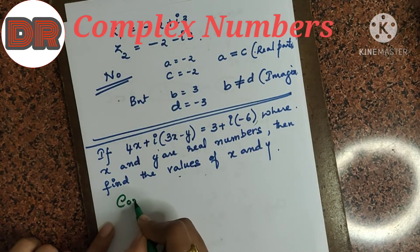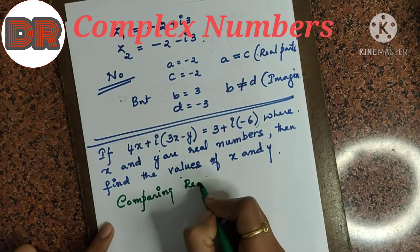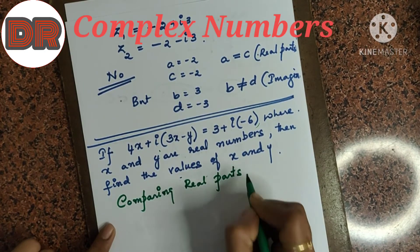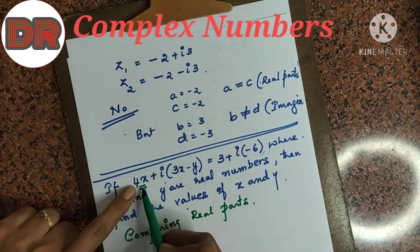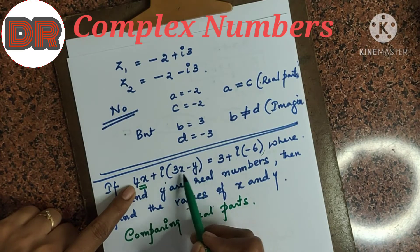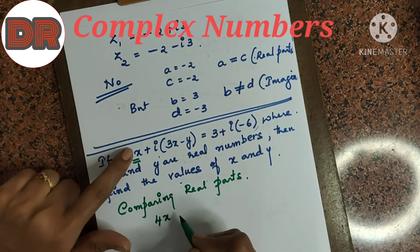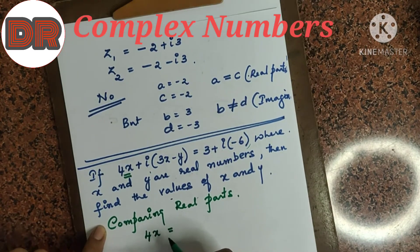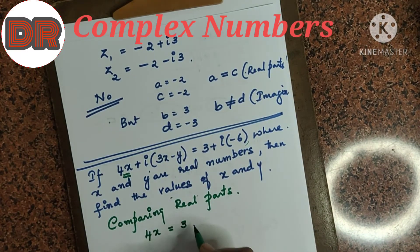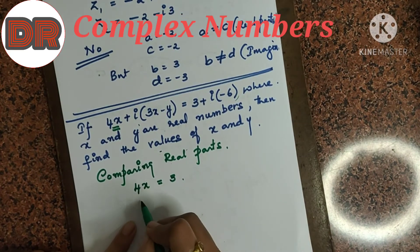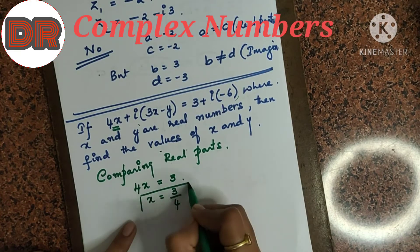Comparing real parts: the real part on the LHS is 4x, and the real part on the RHS is 3. So 4x equals 3, which gives x equals 3 by 4. So we have found the value of x.